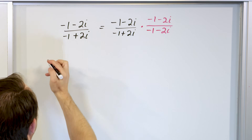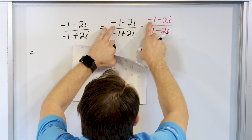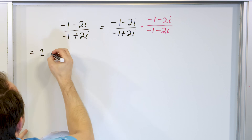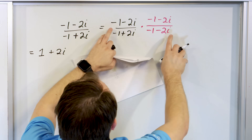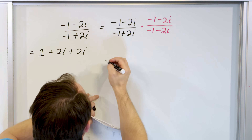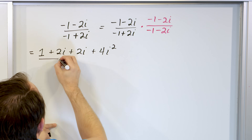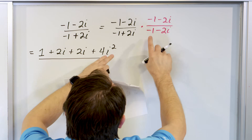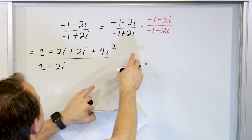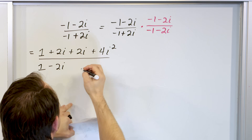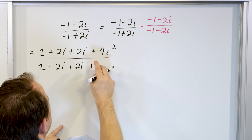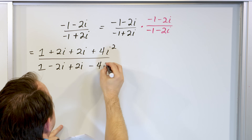In the numerator we have FOIL. Negative one times negative one is positive one. Inside terms: negative one times negative two i is positive two i. Outside terms: negative one times negative two i again gives positive two i. Last term: negative times negative is positive, two times two is four, i times i is i squared. The denominator is very similar: negative one times negative one is positive one, inside terms give negative two i, outside terms give positive two i — there's our cancellation — then negative two times two is four and i times i is i squared.